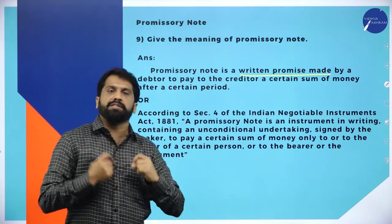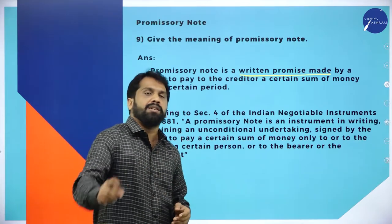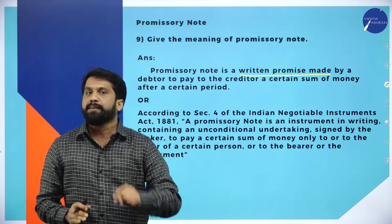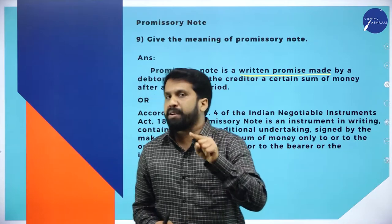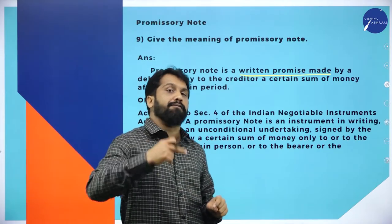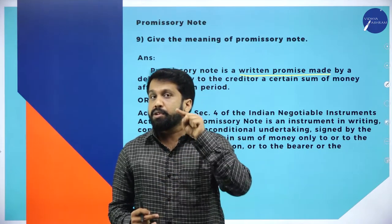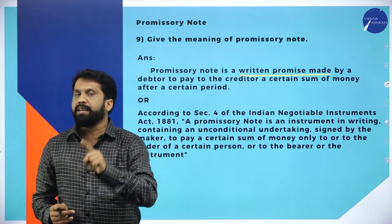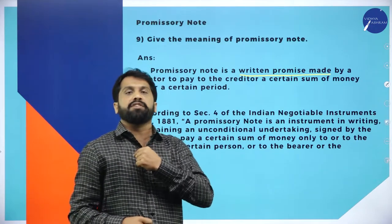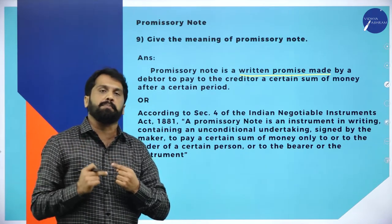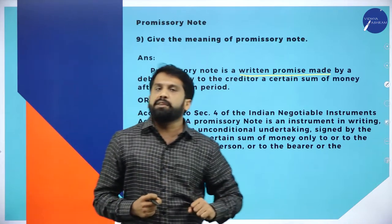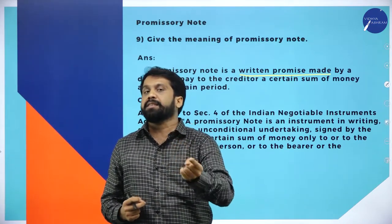What is promissory note? Same scenario — I am the seller, you are the buyer. But here, I will not prepare any document. The seller will not prepare any document. The buyer will prepare the document, sign it, and give it to the seller. You will promise: I will pay you 10,000 after 2 months. In promissory note, you promise to pay — not order. In bill of exchange, the drawer (seller) prepares the document. In promissory note, the drawee (buyer) prepares the document. In bills of exchange it is order to pay; in promissory note it is promise to pay.